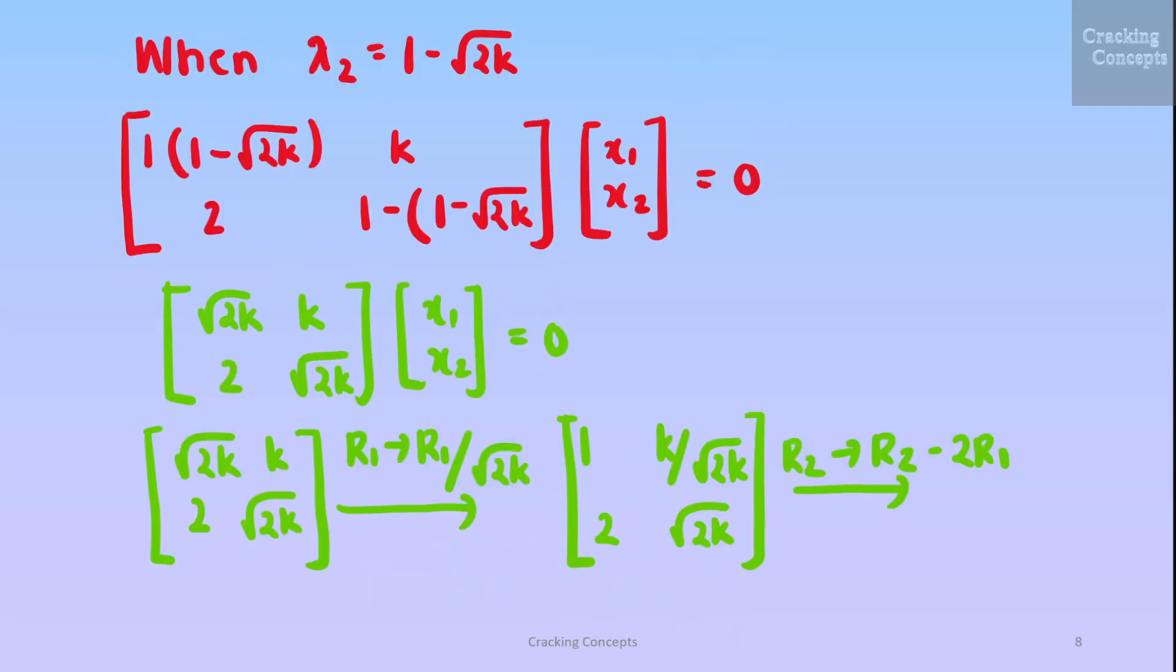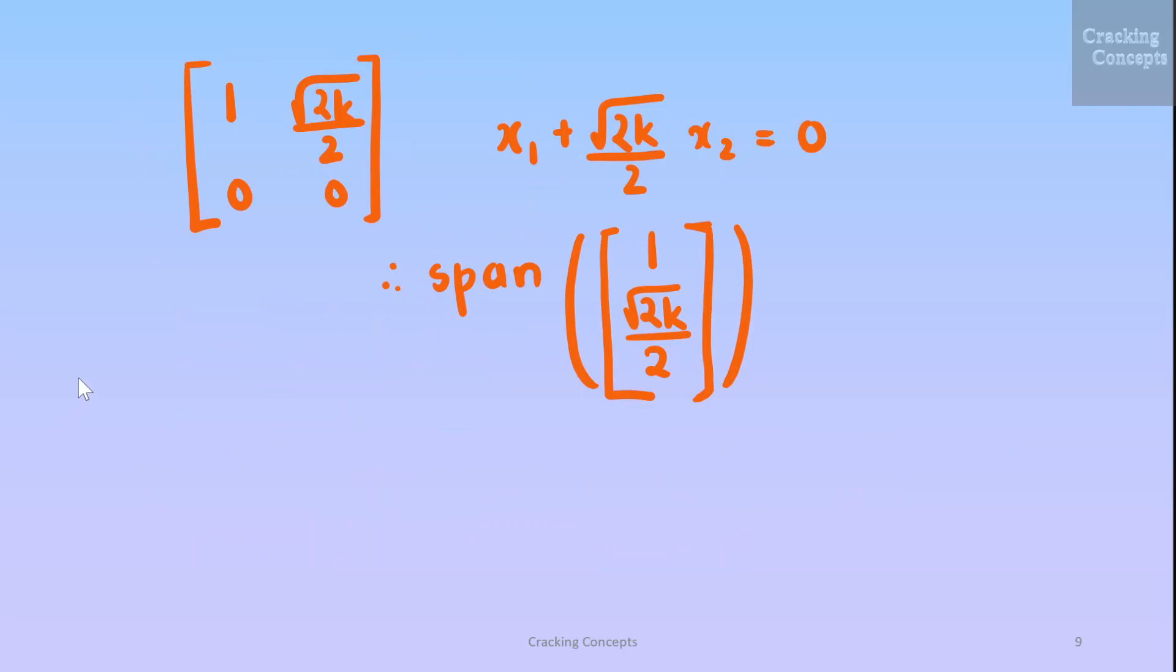Then we'll take the case where lambda is 1 minus root 2K. We'll substitute this value in this expression and on simplifying we'll get this form. Now we take out this matrix and perform row transformations on that. We'll begin by multiplying the first row by 1 by root 2K. Then we'll subtract the second row from twice the first row. Then we'll get the simplified matrix. So we can write it as x1 plus root 2K by 2 x2 will give us 0. So we'll take out the coefficients of both which will give us the span that is the linear combination of the vectors here. It is 1, root 2K by 2.